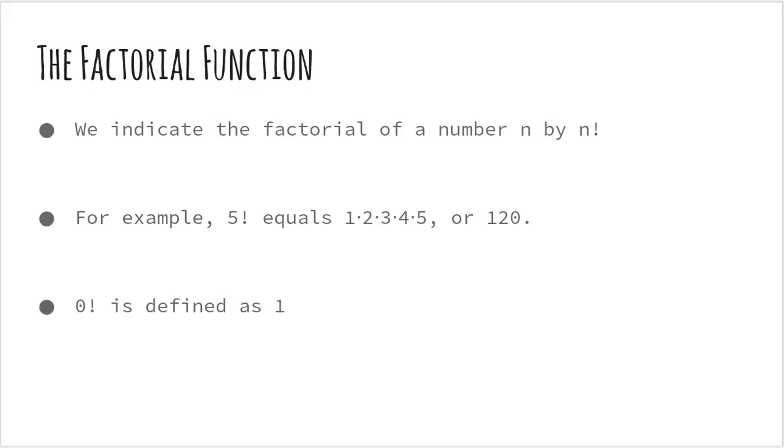Okay, now we will look at the factorial function. We indicate the factorial of any number n by n factorial. Now, n factorial is essentially 1 into 2 into 3 into 4 all the way up to n-1 into n. Let's look at how to compute this factorial function. We have just seen that it's the multiplication of every natural number up to n. The factorial function is defined for all positive integers along with 0.